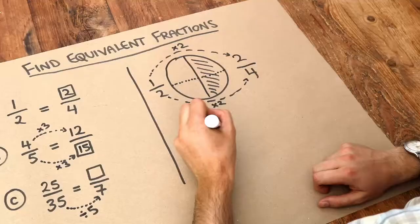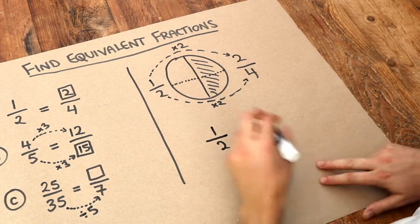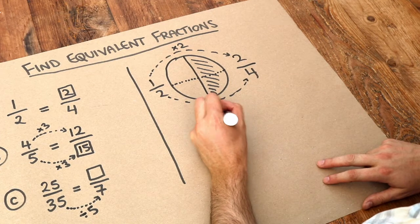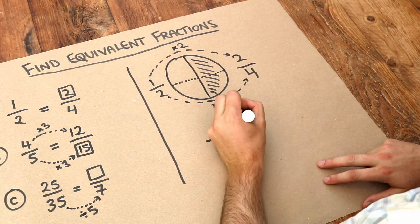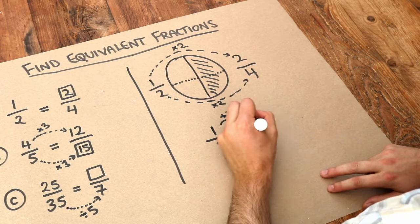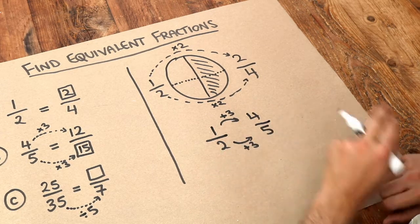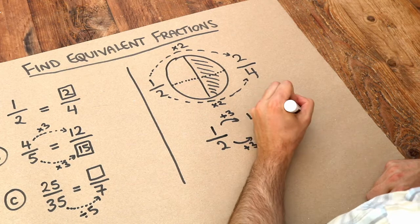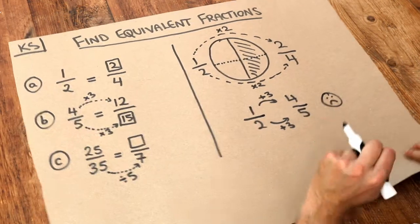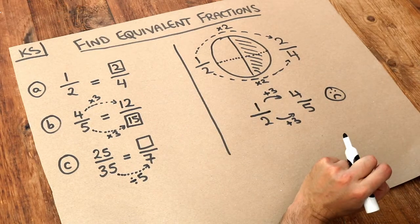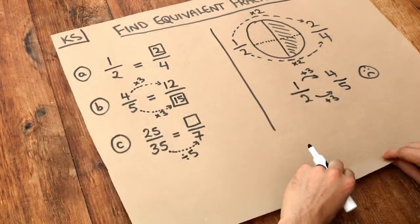It's not okay to add or subtract. If I had a half and I was to add say three to top and bottom, then the top you would have four and the bottom you would have five, but half a piece is certainly not equal to four fifths a piece. So they are not the same fraction. We can only times both numbers by the same thing or divide both numbers by the same thing.